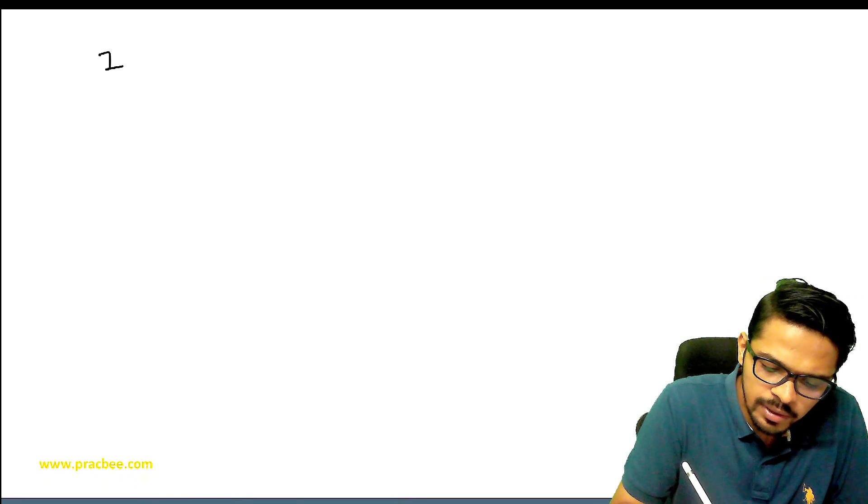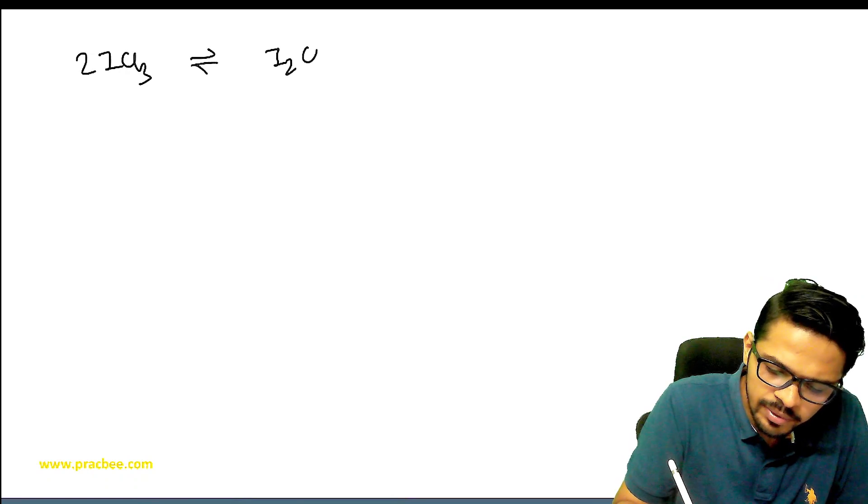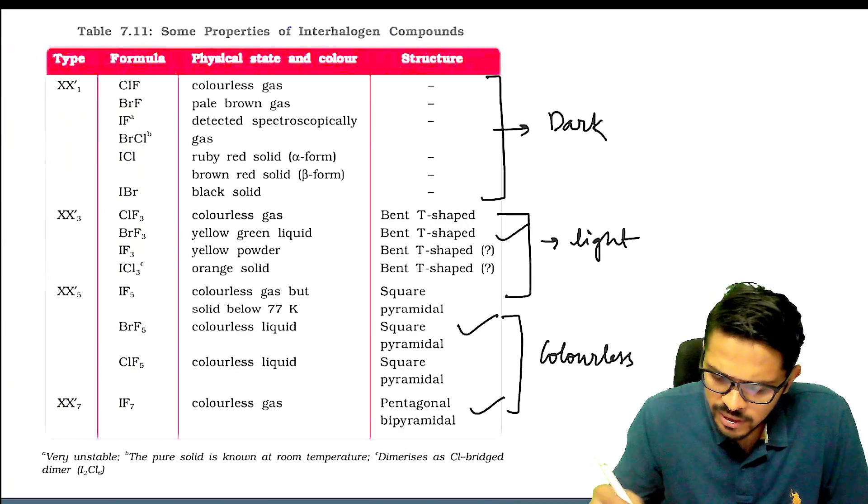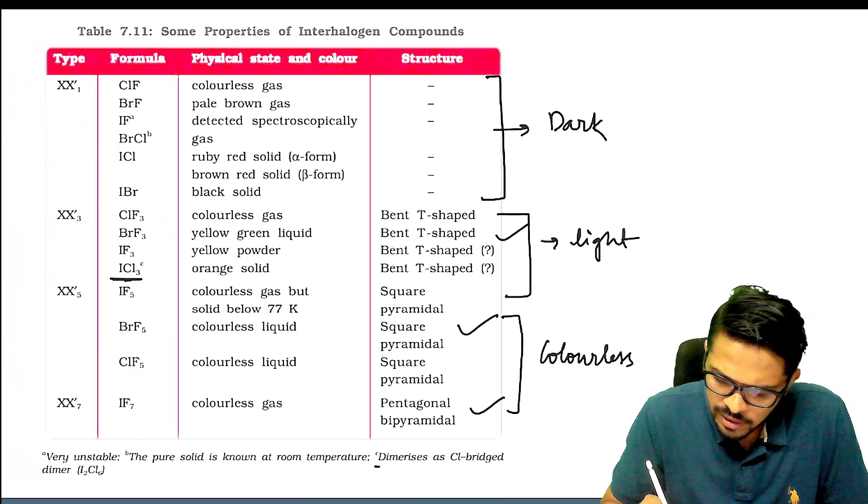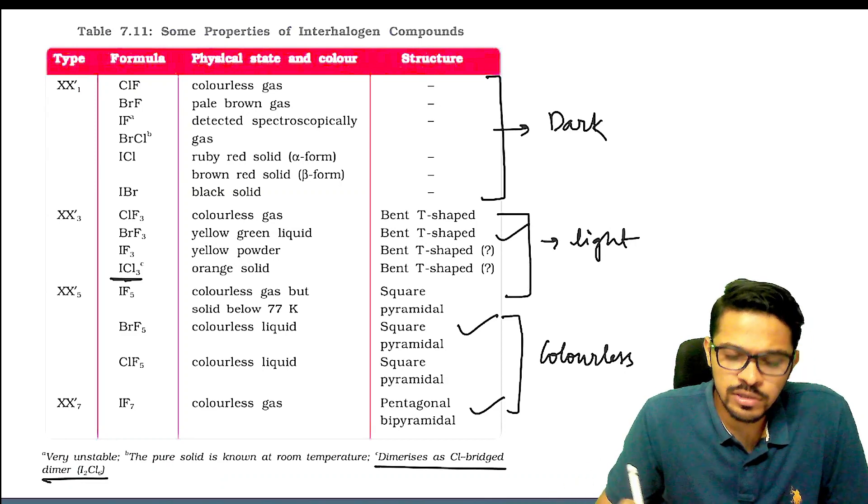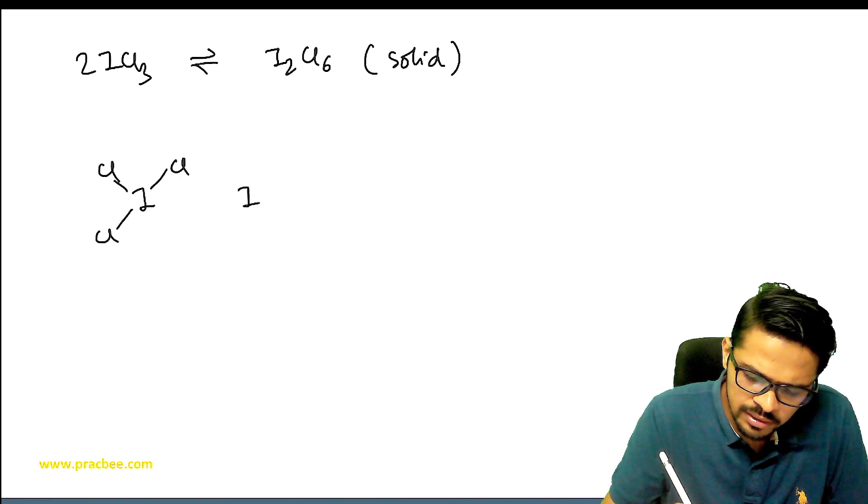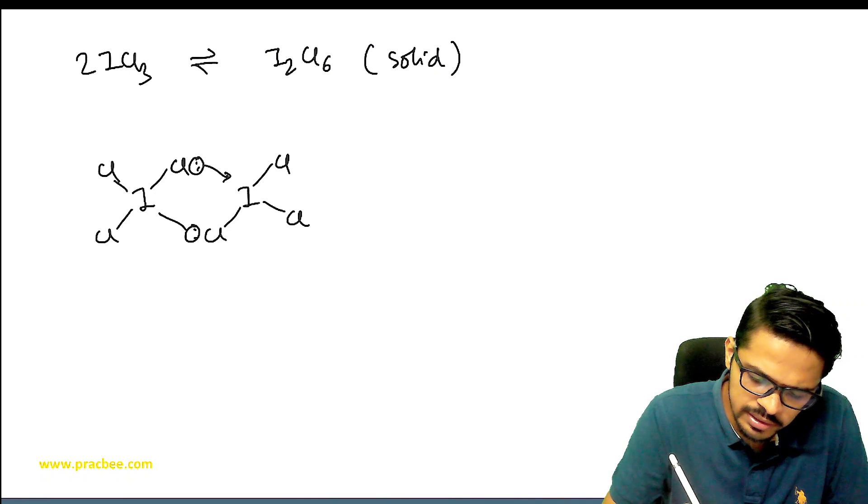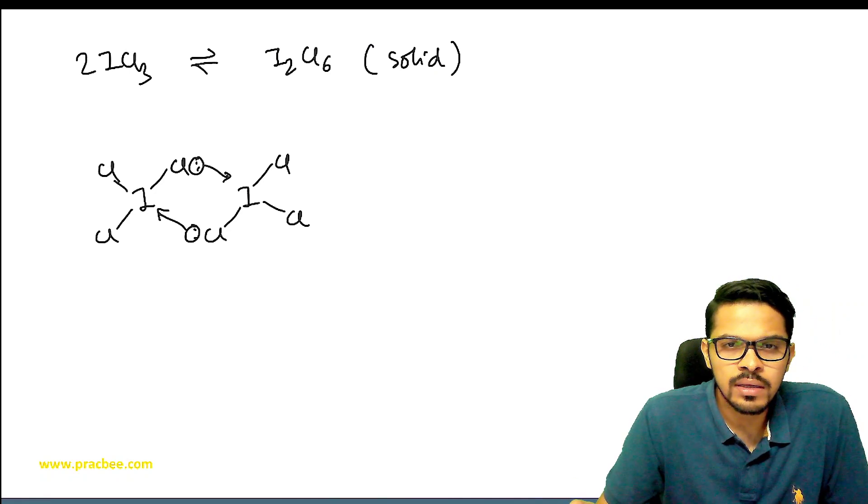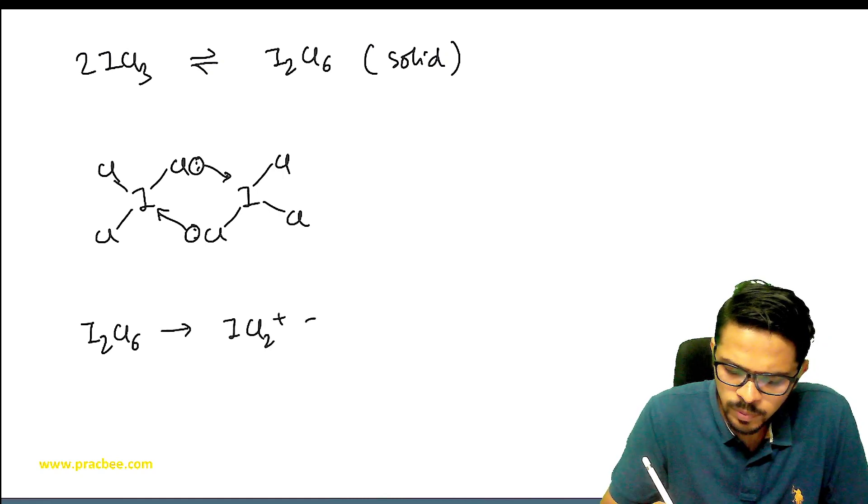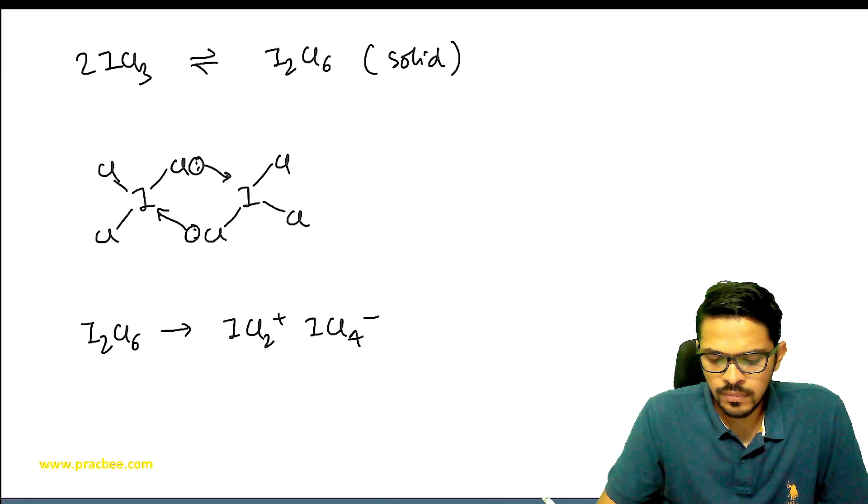If we talk about ICl3, ICl3 basically exists as dimer I2Cl6 in solid state. As shown in this table, ICl3 dimerizes as Cl-bridged dimer. Its structure is like this: ICl3 looks like this, another ICl3 like this. Now chlorine shares its lone pair with this iodine. So this is I2Cl6. It has also been seen that I2Cl6 can undergo ionization to form ICl2+ and ICl4-.